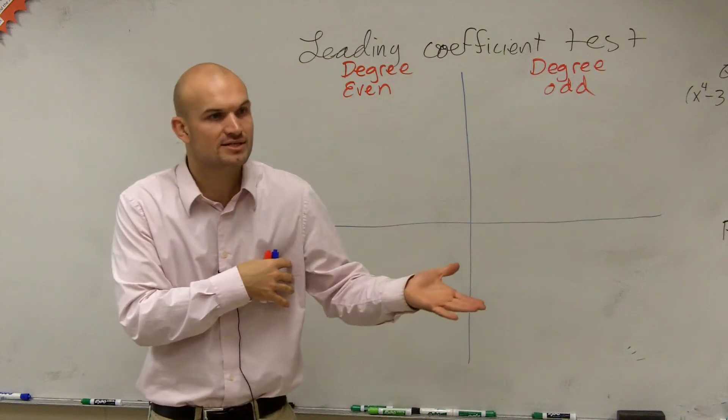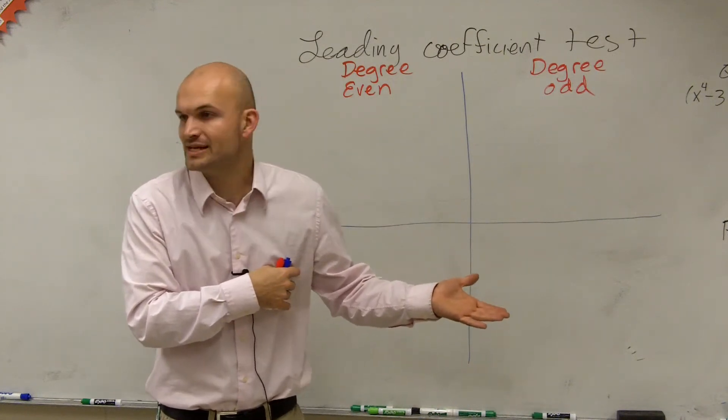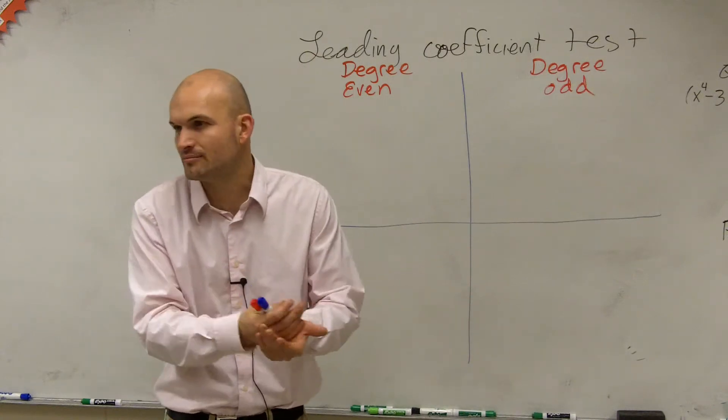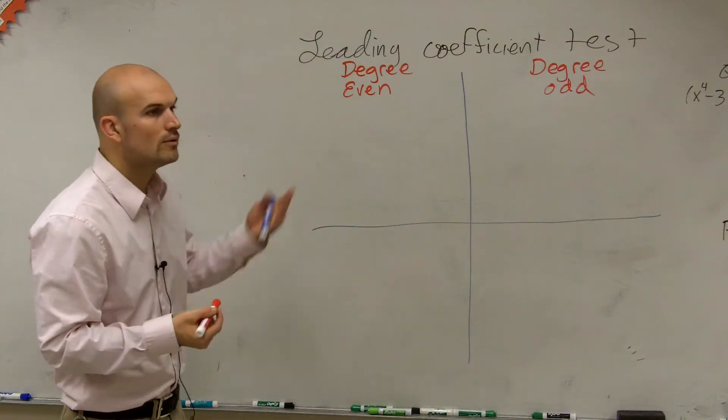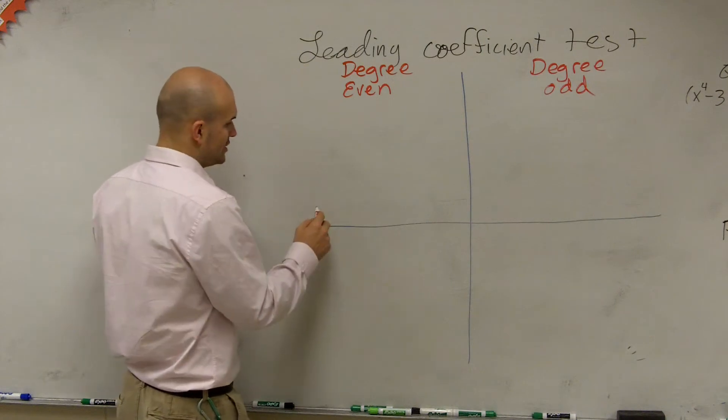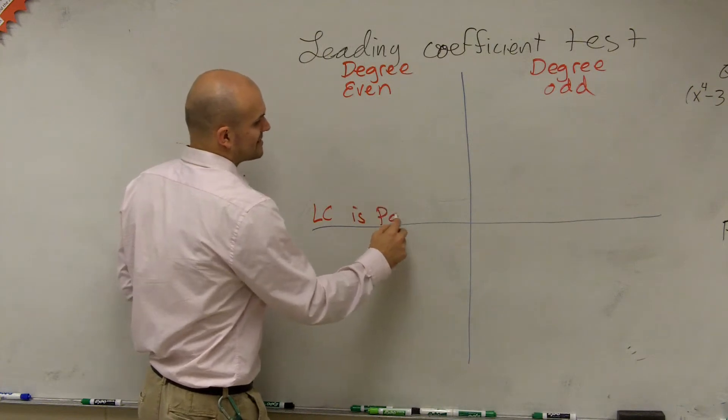We just went over a whole bunch of formulas. Now, what is an example of when we had a degree is even? The name of that polynomial was a quadratic, right? So if we look at when a degree is even, and let's say our leading coefficient, which I'm just going to abbreviate, is positive.